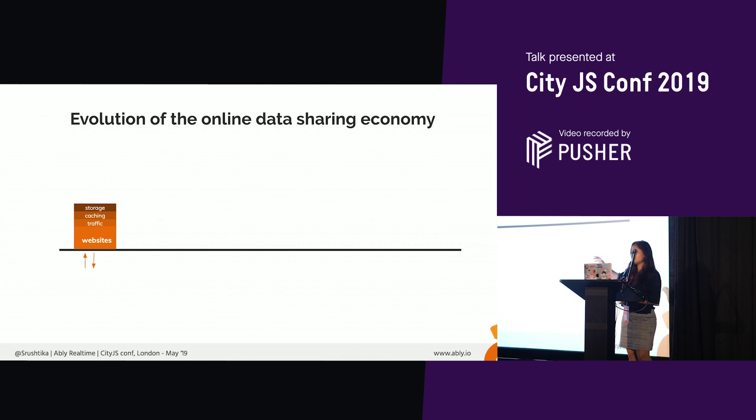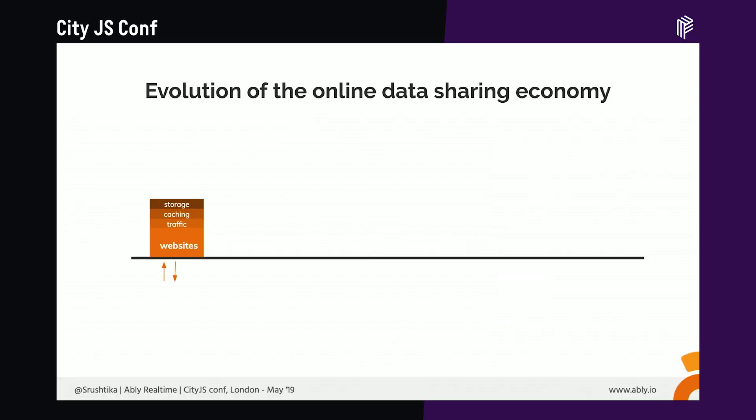While all of this was happening, a couple of people observed this trend and said: every business wanting to put services online was facing the same issues and solving all those functionality layers from scratch. As engineers, we avoid reinventing the wheel. So, why not implement this sort of functionality once and provide it as a service for any company that wants to use it? That's essentially how the concept of CDN, or Content Delivery Network, came about — taking all of this functionality and providing it as a service that any business or application could use.